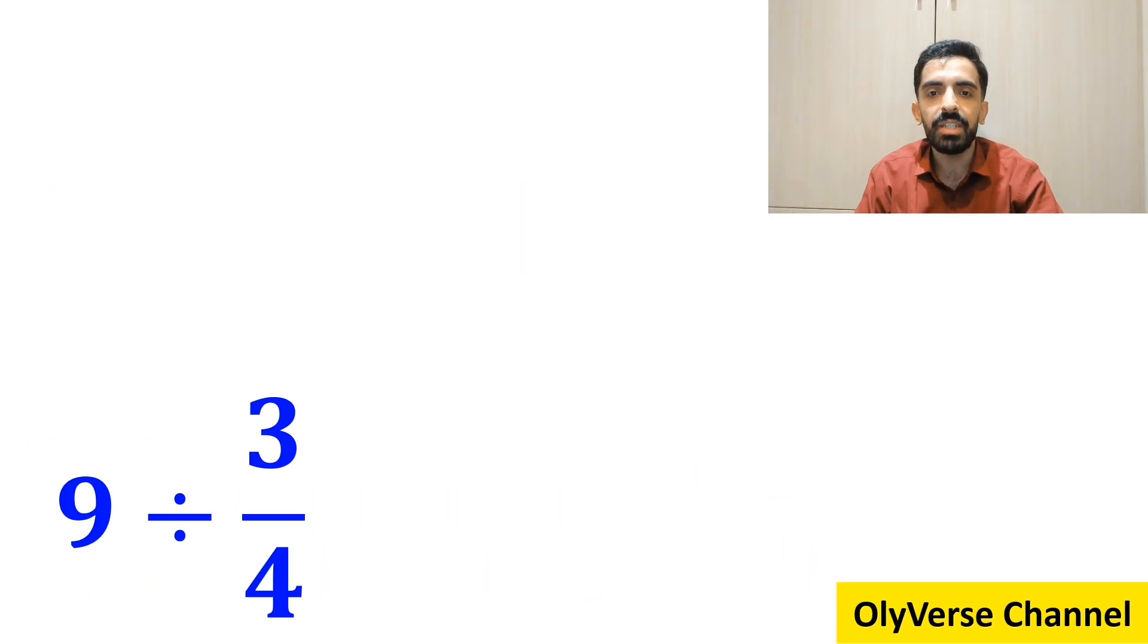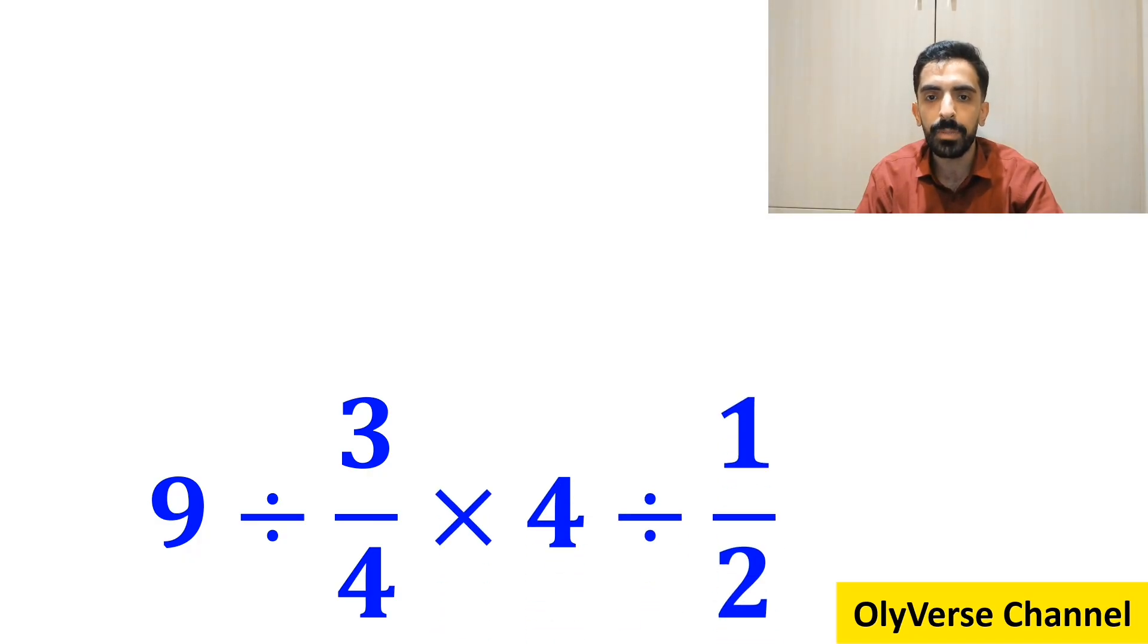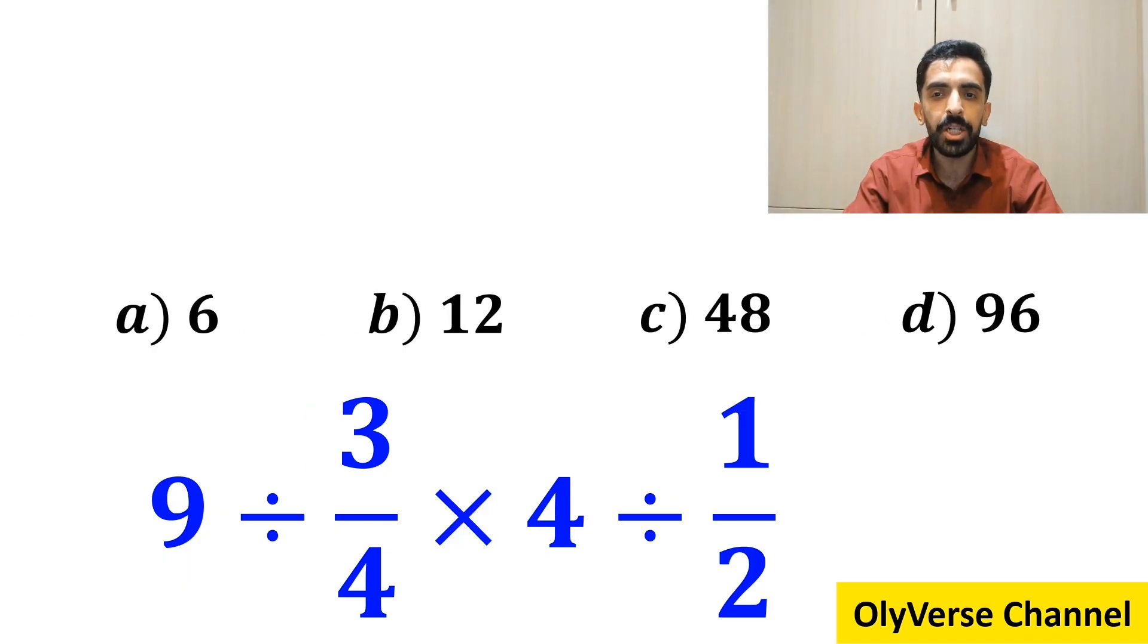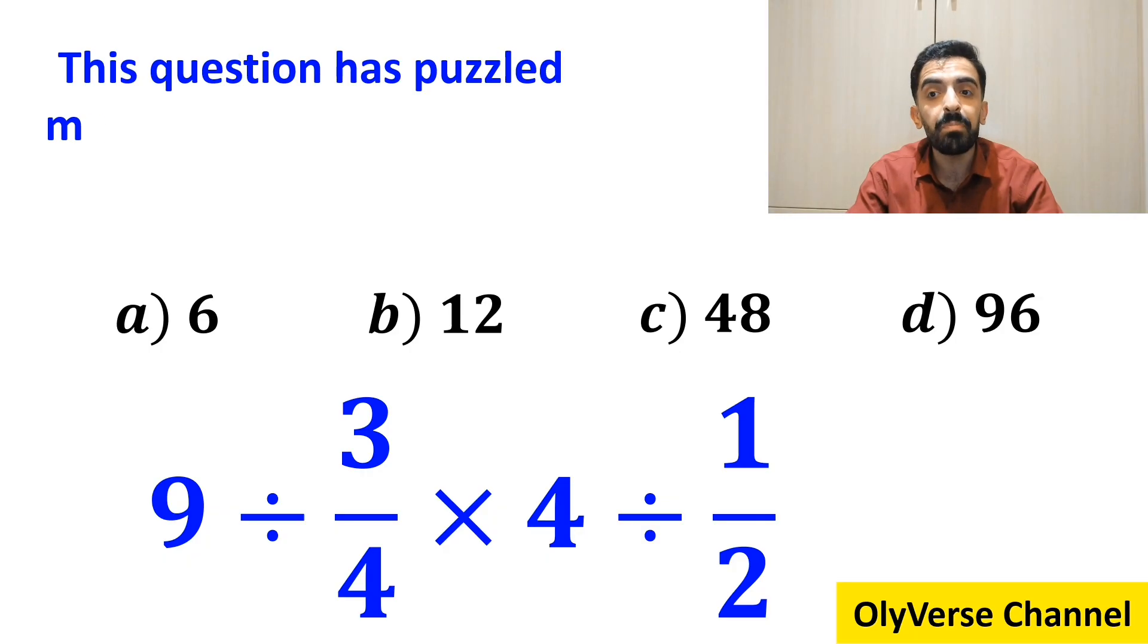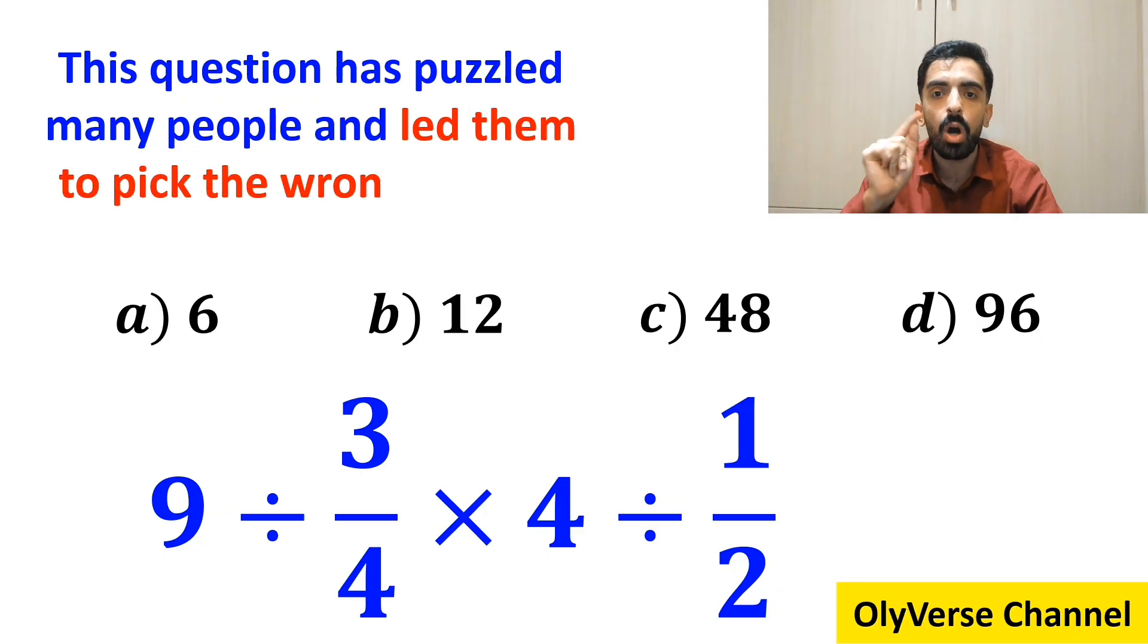What is the value of the expression 9 divided by 3 over 4 multiplied by 4 then divided by 1 over 2? Which option do you believe is the correct answer to this question? This question has puzzled many people and led them to pick the wrong option.